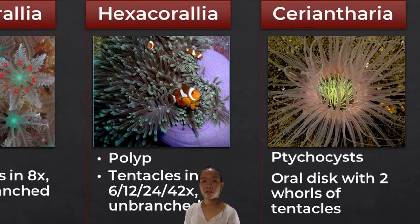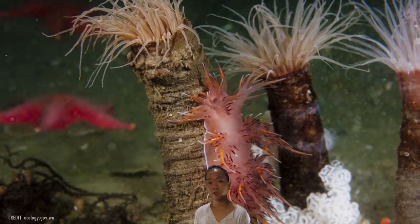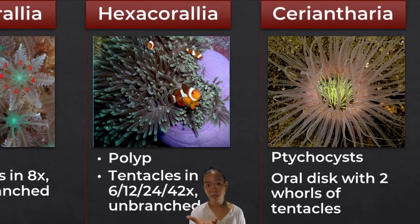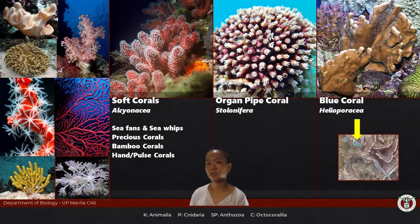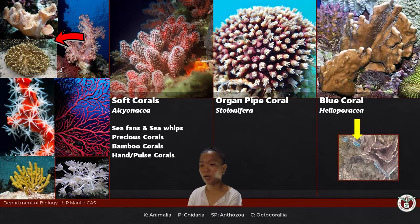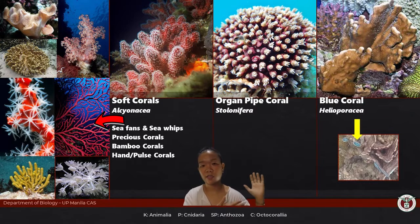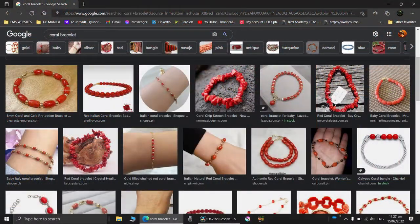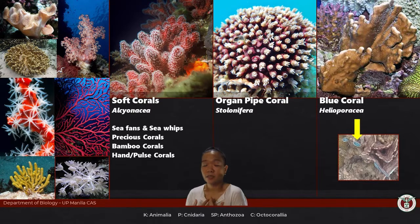For Octocoralia, there are three main groups: Alcyonacea, Stolonifera, and Helioporacea. Alcyonacea are known as soft corals — leather corals, sea fans, and sea whips. Previously sea fans and sea whips were classified as Gorgonacea, but they are now part of Alcyonacea. You also have precious corals used in jewelry, bamboo corals (genus Isis), and pulse corals like Xenia.